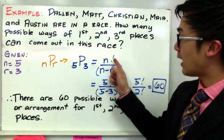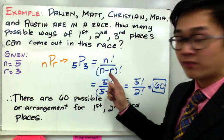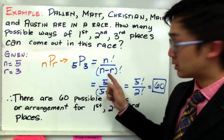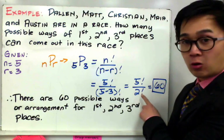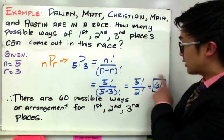So it's equal to the formula n factorial all over n minus r factorial. By direct substitution, we'll have 5 factorial all over 2 factorial, which gives us 60.